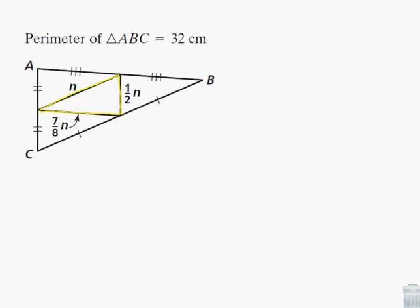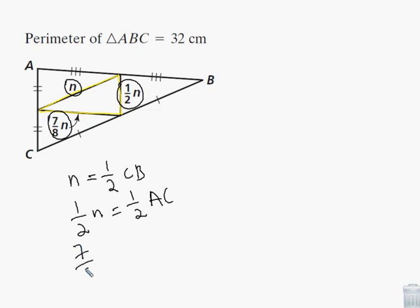Remember the mid-segment is half the length of the other side, so we'll take n, that's parallel to CB. So n equals one half CB. And then one half n is equal to one half the side that is parallel to, which is AC. So equals one half AC.